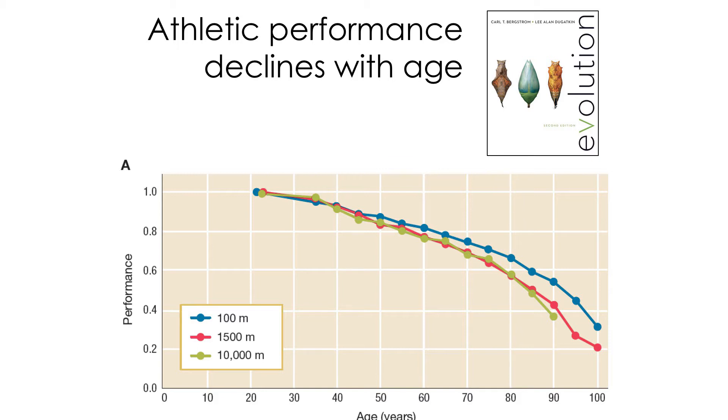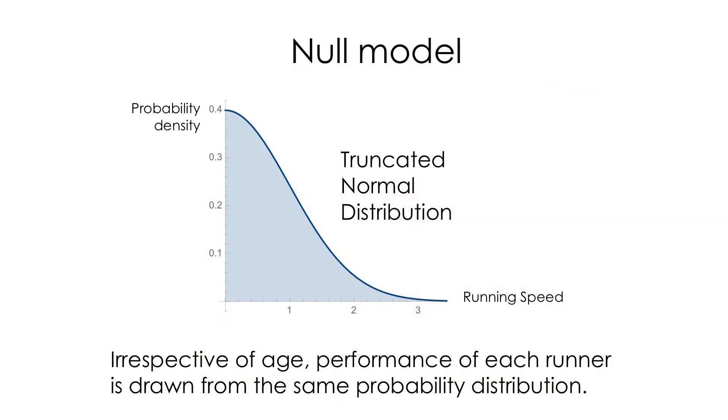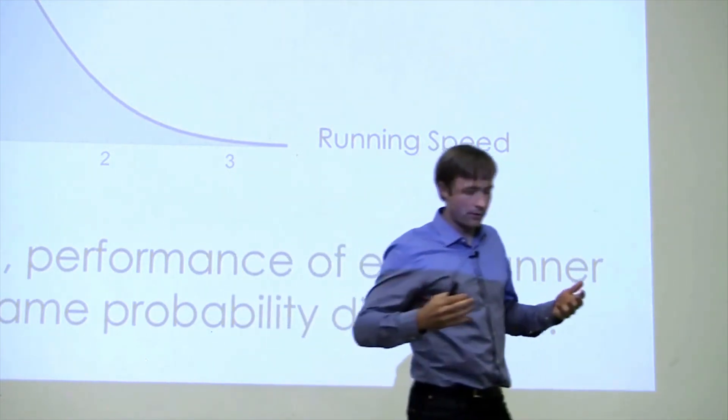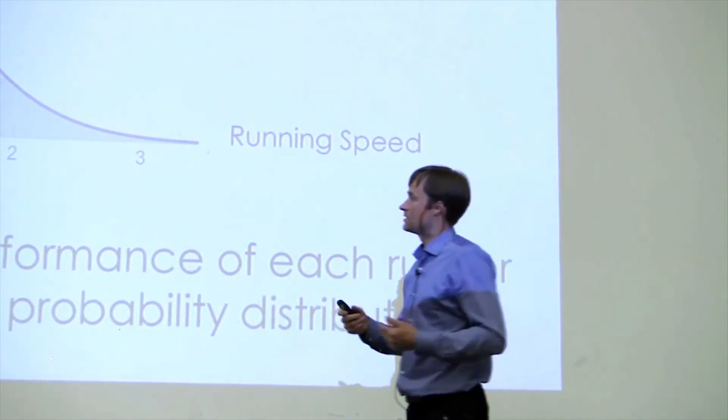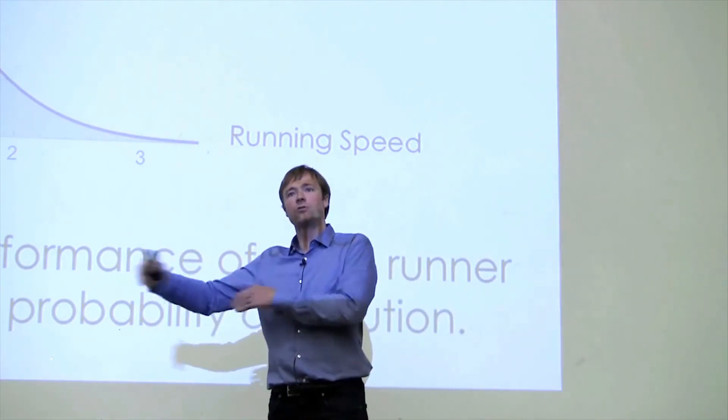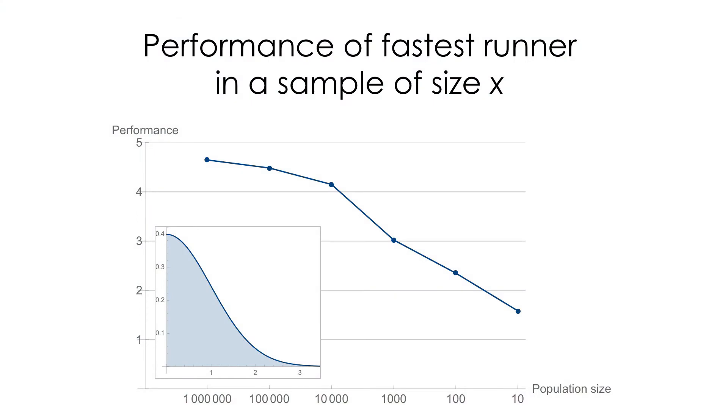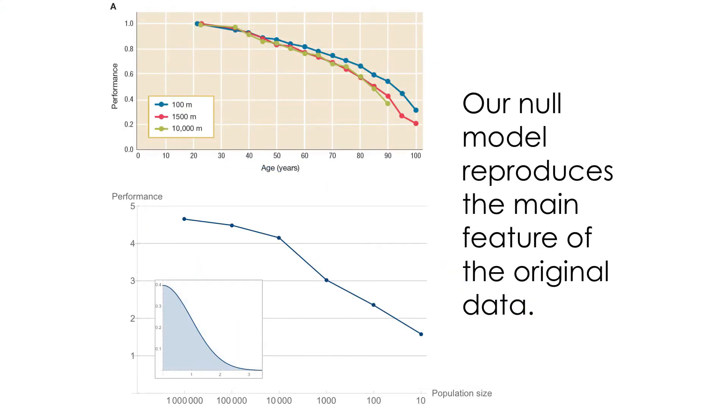But as we discussed earlier in the quarter, if you take a null model where every individual in every one of those age groups is pulling from the exact probability distribution of performance, the only difference is that you change the group size for each age group, which we do know is the case, you get a similar decline. So if you go to the original data, create this null model, a very simple null model where everyone has the same performance probability distribution, you just change the size at the different ages, you get a similar decline.